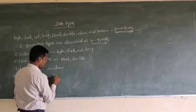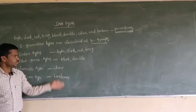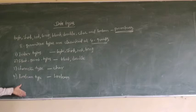So these are the 8 primitive data types — byte, short, int, long, float, double, character, and boolean — classified into 4 groups: integer type, floating point type, character type, and boolean type. And this we can represent in a diagram.